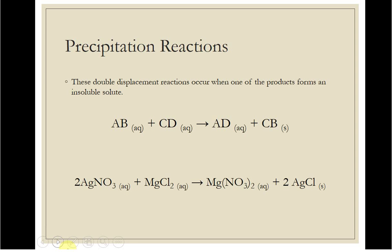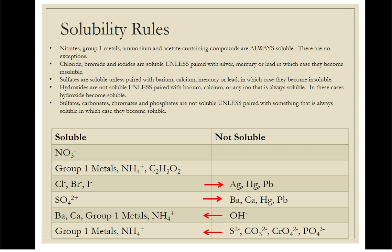Precipitation reactions are double displacement or double replacement reactions where you have one of the products forming an insoluble solute. This is not solid and solid. You have to have only aqueous, aqueous, aqueous, and one solid on the right. Otherwise, it just doesn't count. So the question is, how do you know what is soluble? And we're going to use our solubility rules.